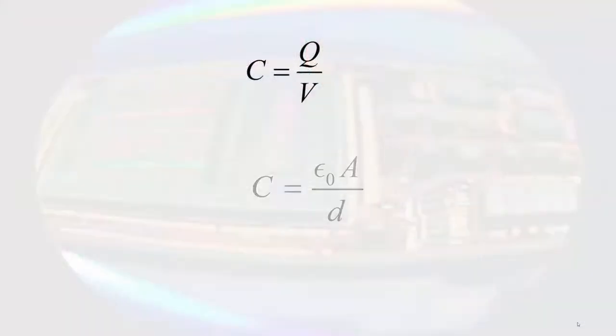Now one farad is a lot of capacitance. If we take a situation we described of two parallel plates, the capacitance of two parallel plates is given by something called the permittivity of free space, a constant equal to 8.5 times 10 to the negative 12 farads per meter, times the area of the plates divided by the separation of the plates.